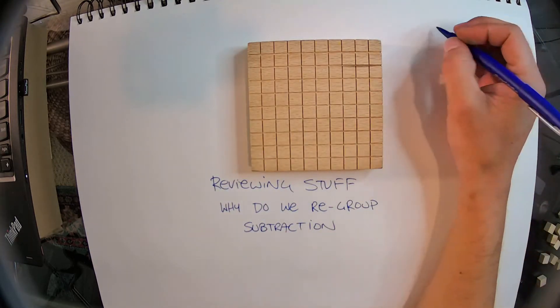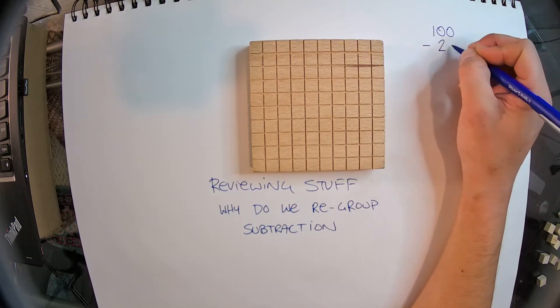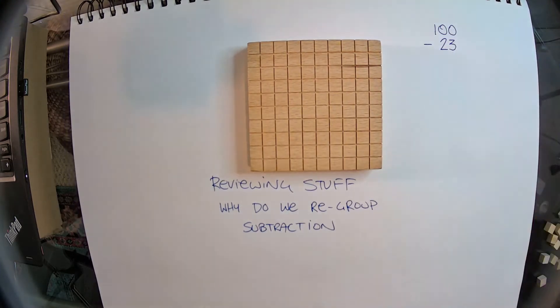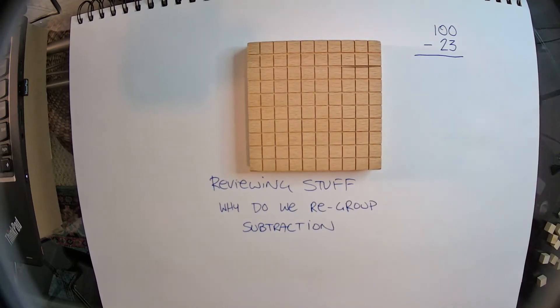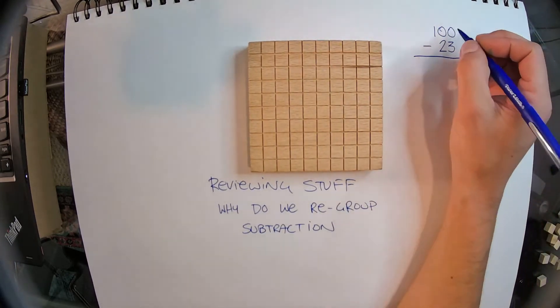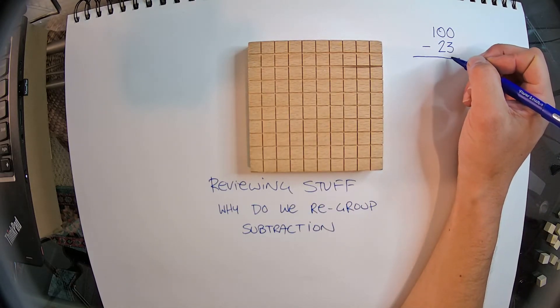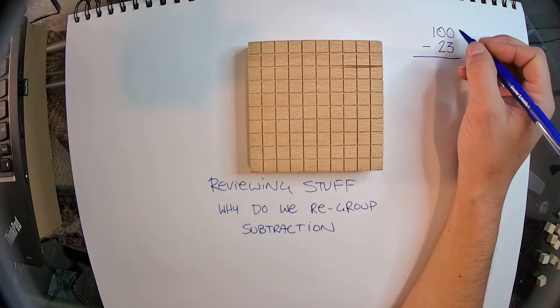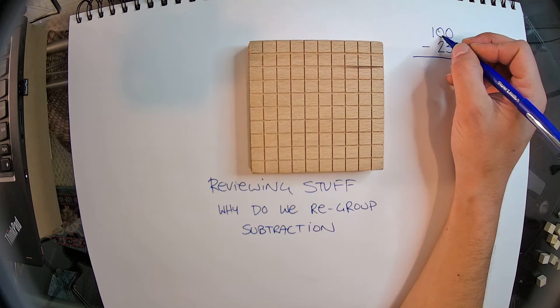So let's say that I have a problem like 100 minus 23. The first thing that we do is we come over here and we say 0 minus 3. And we can't do 0 minus 3, can we? So what's actually happening is we need to borrow from next door.